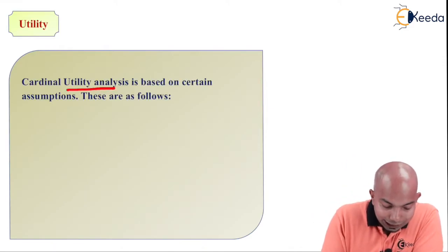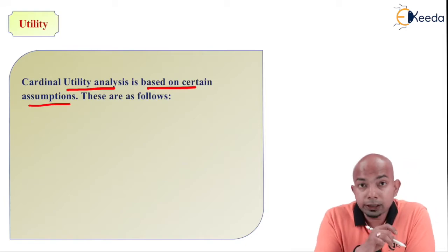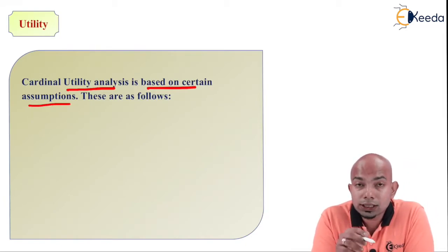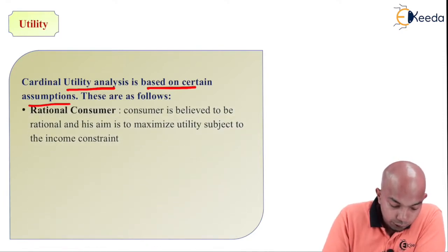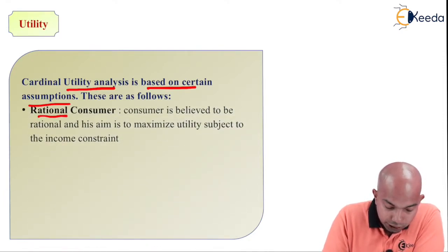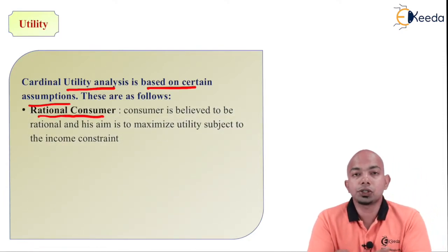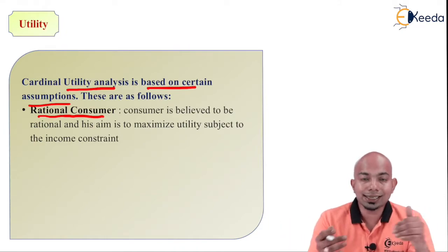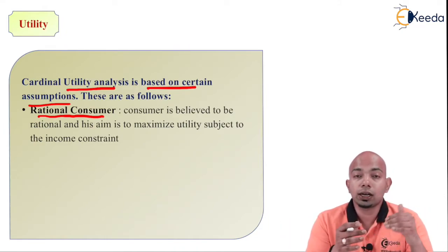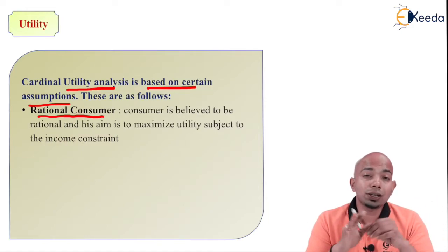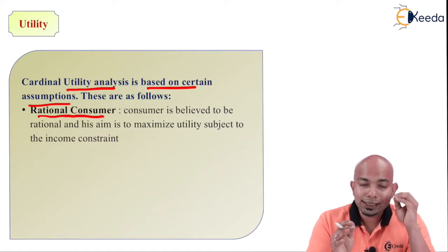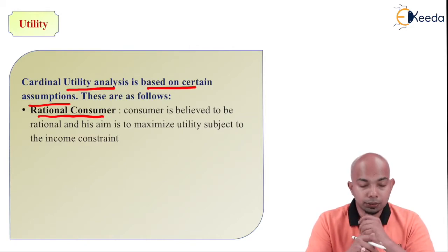Cardinal utility analysis is based on certain assumptions. The first assumption is that we assume all consumers under this approach are rational consumers. No one is irrational, no one is insane. Everyone is of sane mind and has the same kind of logic. That is the assumption.